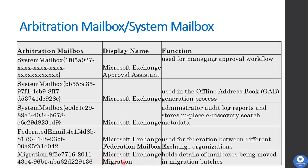The next arbitration mailbox is Microsoft Exchange Migration. This mailbox holds the details of mailboxes being moved in migration batches — whether you are moving mailboxes from one database to another or from one Exchange server to another. That migration batch data will be stored here, and you can check the status using the get-moverequest command.